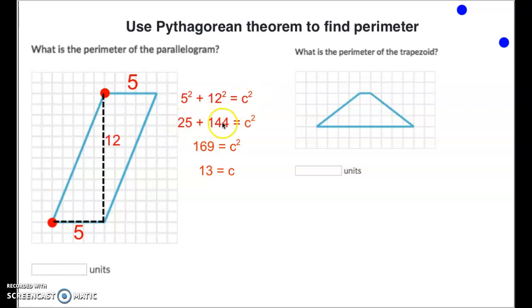So 25 plus 144 is c squared. 25 plus 144 is 169. Remember to get rid of that c squared and get it down to a c, we need to take the square root of both of those. Square root of 169 is 13. The square root of c squared is just c because the square and the square root cancel each other. That means our distance over here is a distance of 13.